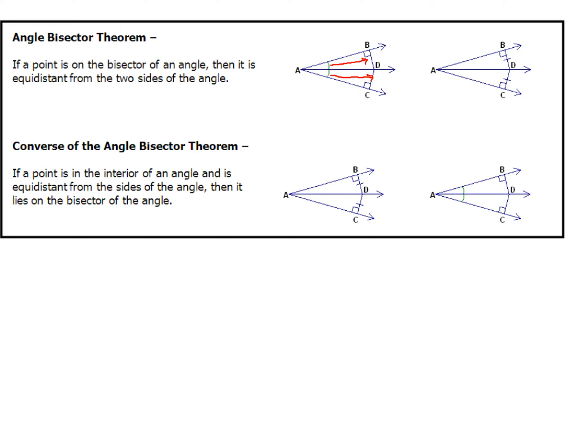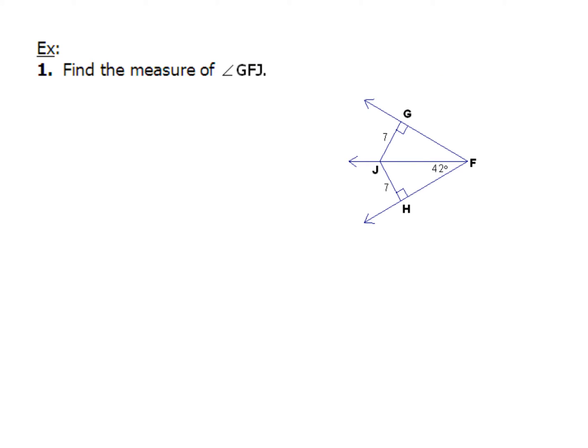All right, let's take a look at our first couple of examples. This is going to be pretty straightforward. Find the measure of angle GFJ. So GFJ, I want to know this angle right here. Well, if I take a look at HJ and the length of segment GH, both of those are seven, which means that the angles that are here and here, both of those angles have to be the same. So GFJ, that angle is going to have a measurement of 42 degrees.